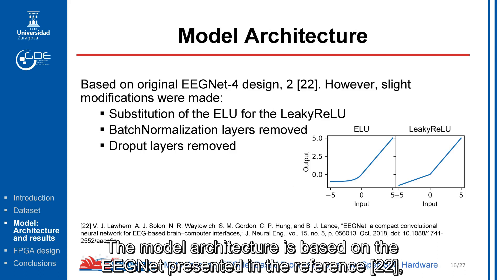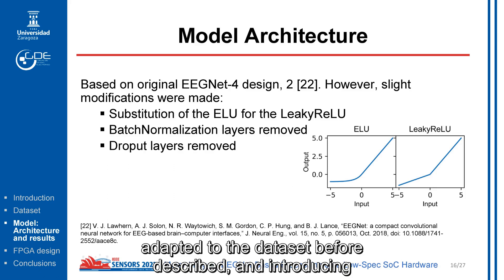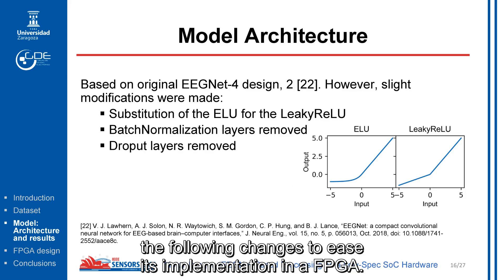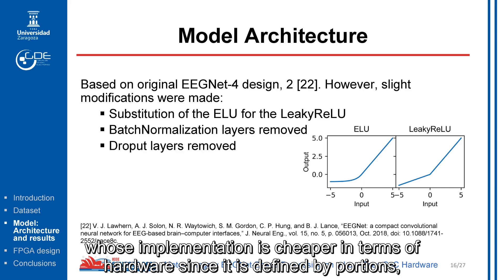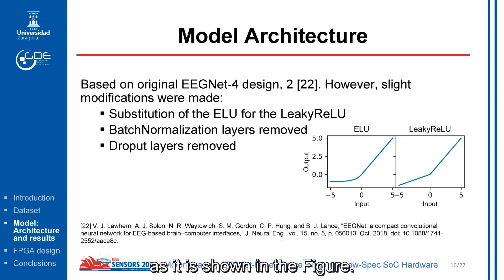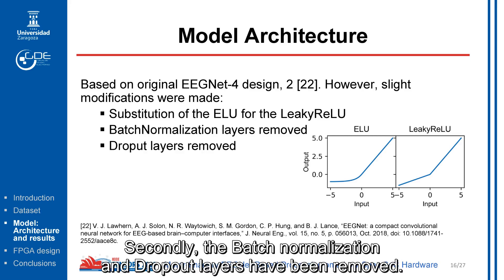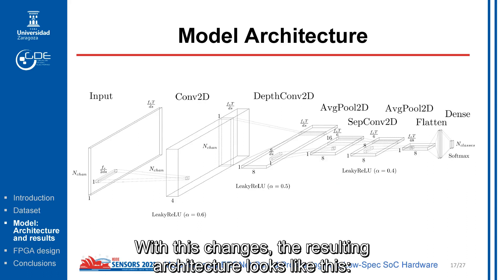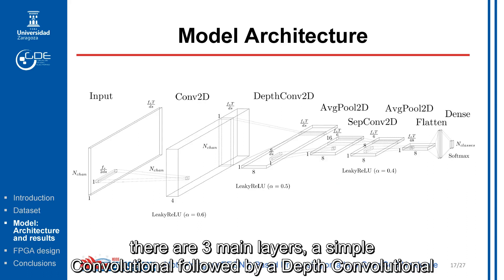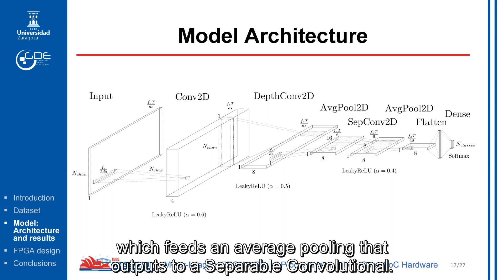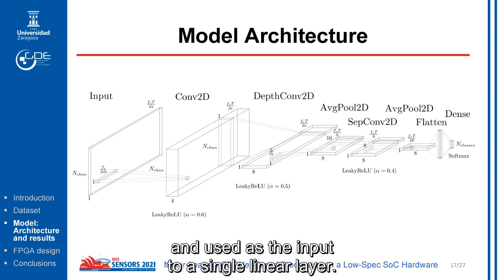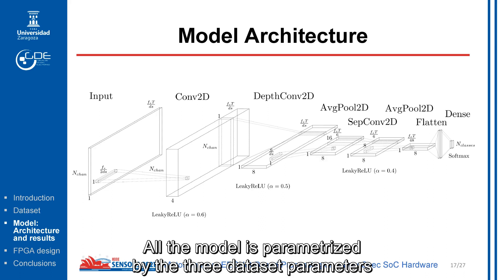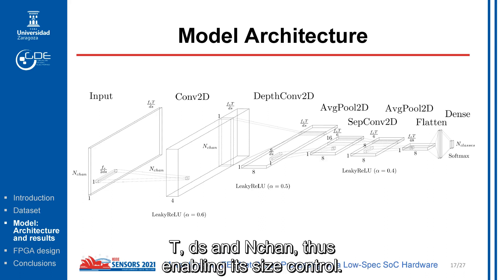The model architecture is based on the EEGNet presented in reference 22, adapted to the dataset described, and introducing the following changes to ease its implementation on an FPGA. First, the original activation function is substituted by the Leaky ReLU, whose hardware implementation is cheaper and needs no defined portion, as shown in the figure. Secondly, the batch normalization and dropout layers have been removed. The resulting architecture has three main layers: a simple convolutional, followed by a depthwise convolutional which feeds an average pooling that outputs to a separable convolutional. Then, after another average pooling, the final feature map is flattened and used as the input to a single linear layer. The entire model is parameterized by the three dataset parameters T, DS, and NS, enabling its size control.